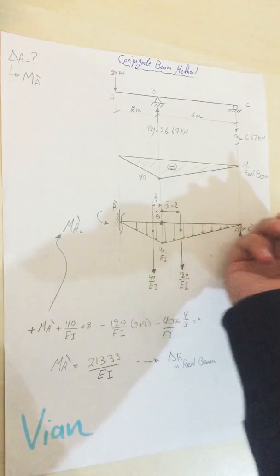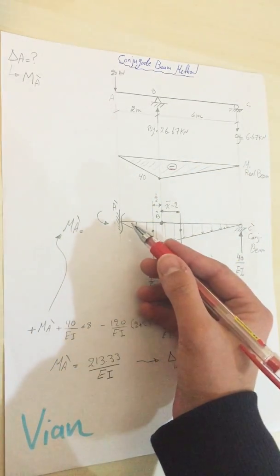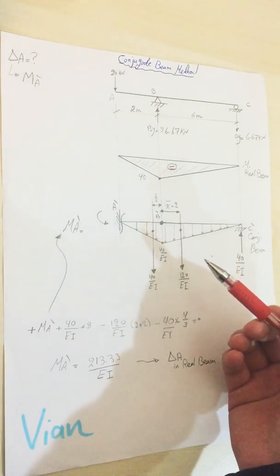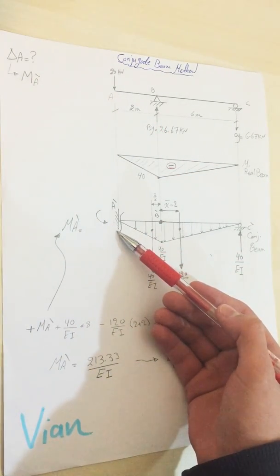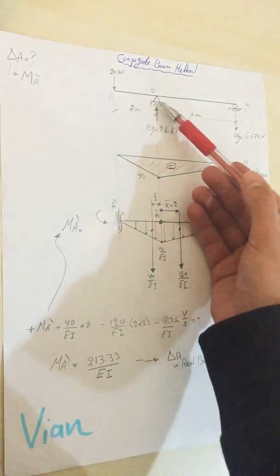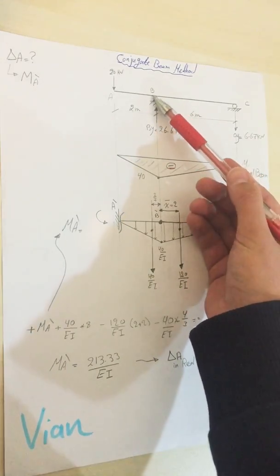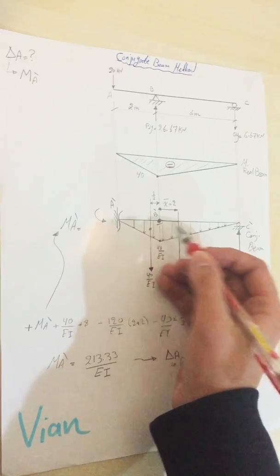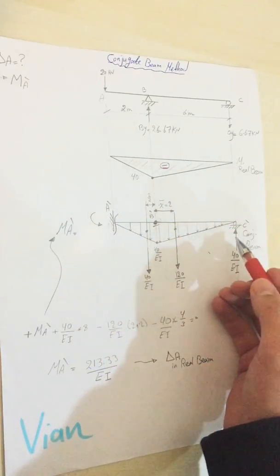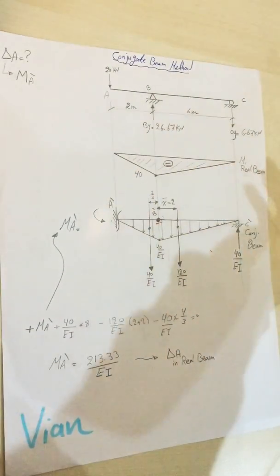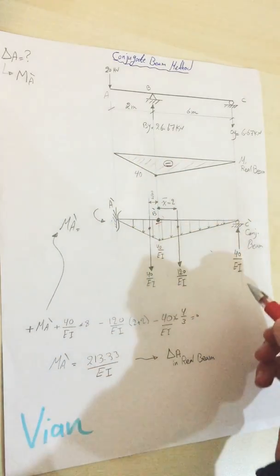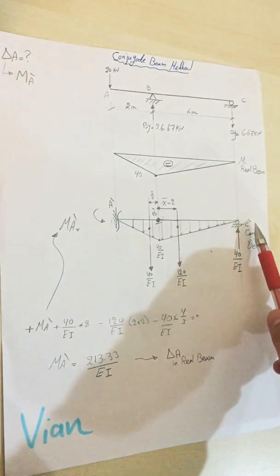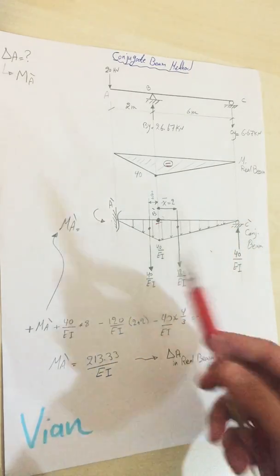I will draw the same beam but change it to conjugate beam. The free end I will put a fixed support for. The continuous pin or hinge will be an internal hinge as we can see in here, and for the roller, because it's at the end, it's going to be the same, just a roller. I will find the reaction for C dash.